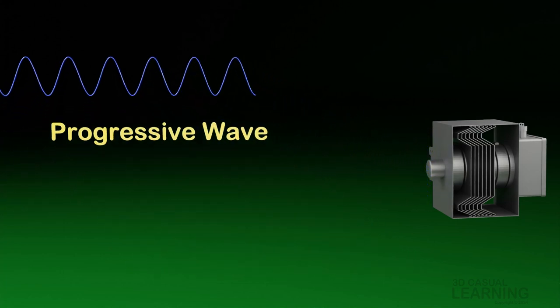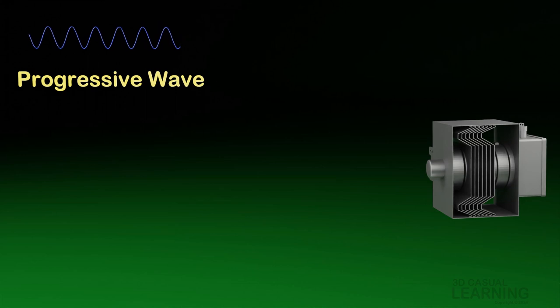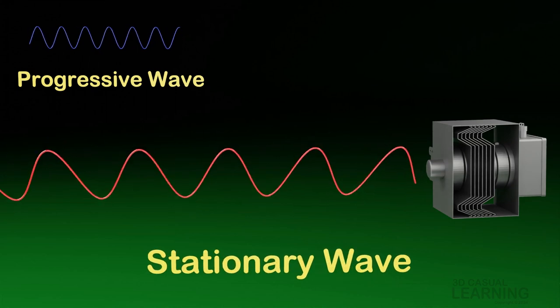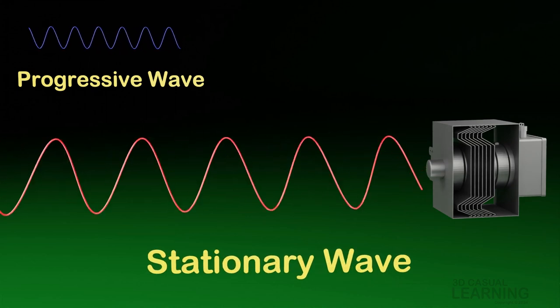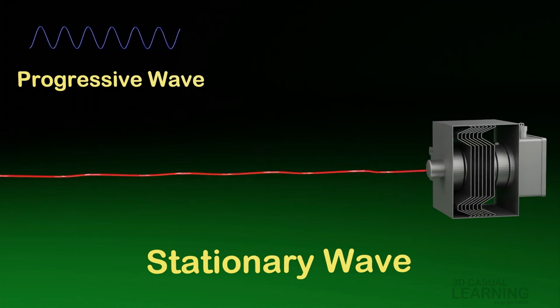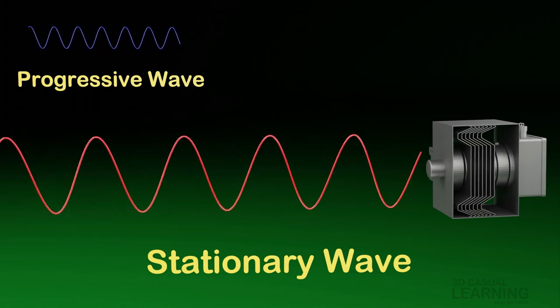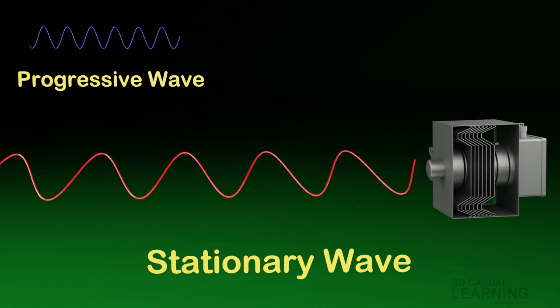But what we want to achieve is a stationary wave since it has maximum intensity. So, we need to convert a progressive wave to a stationary wave.